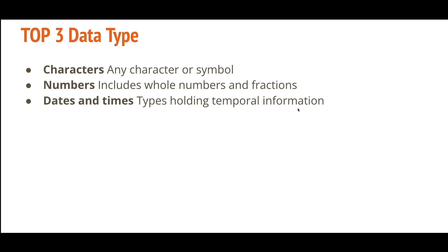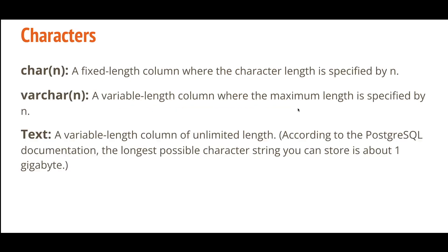We will mainly focus on three data types: characters, numbers, and date and time, because as a data engineer or data scientist you will be working and dealing with these data types mainly. Characters are any symbols such as a, b, c, d. Numbers include whole numbers like integers — 1, 2, 3, 4 — or negative numbers, or fractions like 1.368. Date and time stores date and time data.